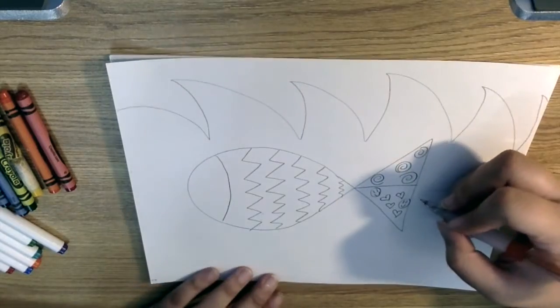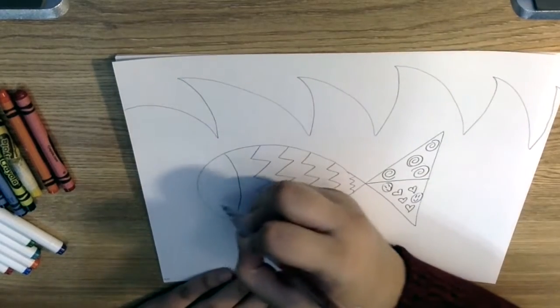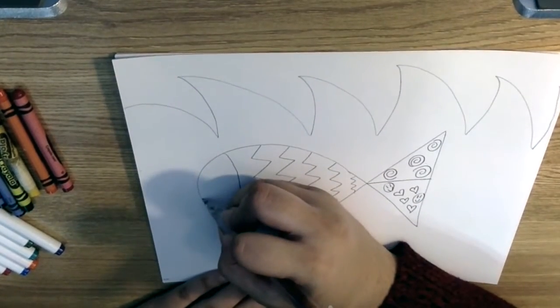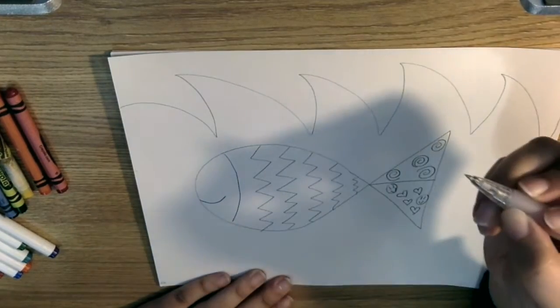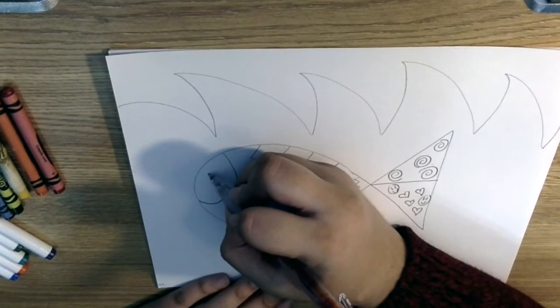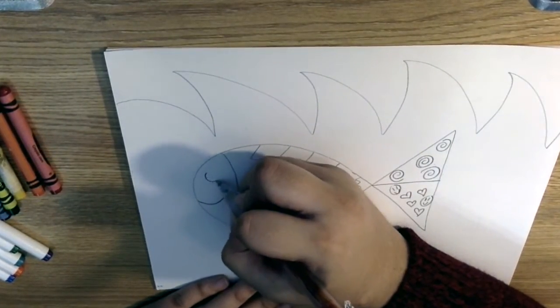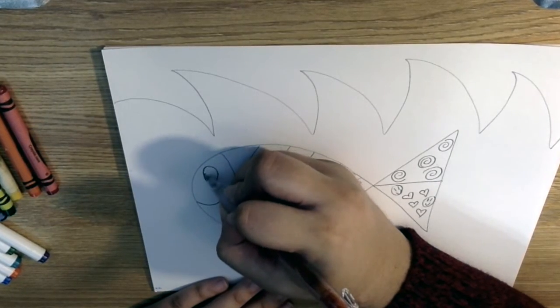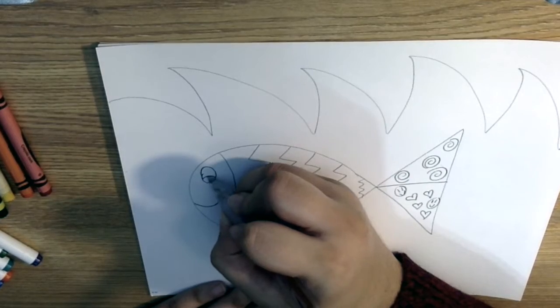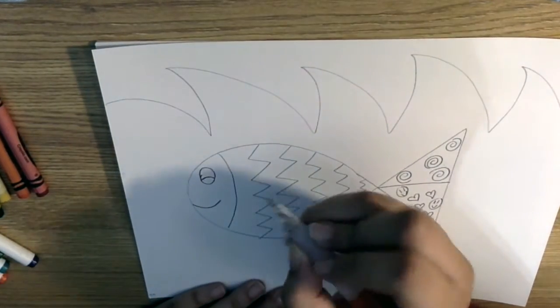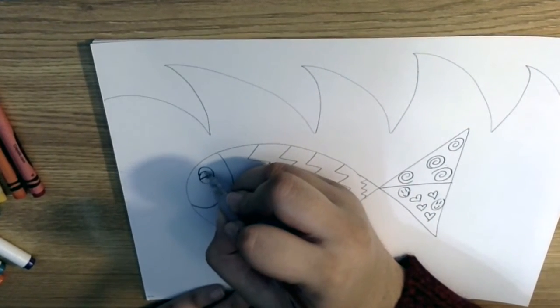We'll return back to our fish face and we'll go ahead and do the mouth. So just a little smile and then we'll draw our eye. So just a circle and another little half moon down here and another moon on top of that one.